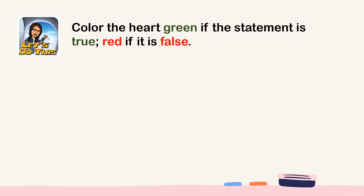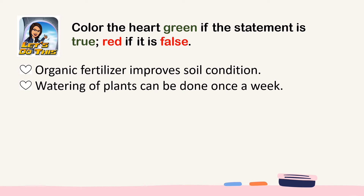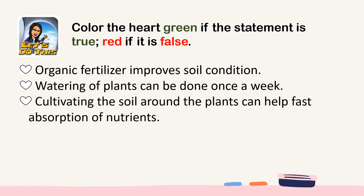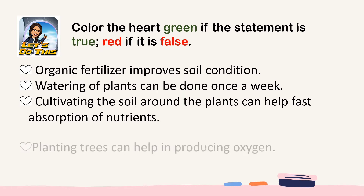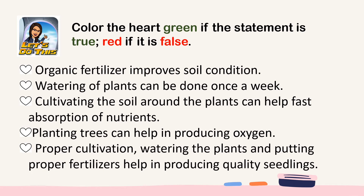Now let's do this exercise. Color the heart green if the statement is true, red if it is false. You can use your notebook for this activity. Statements: 1) Organic fertilizer improves soil condition. 2) Watering of plants can be done once a week. 3) Cultivating the soil around the plants can help fast absorption of nutrients. 4) Planting trees can help in producing oxygen. 5) Proper cultivation, watering the plants, and putting proper fertilizers help in producing quality seedlings.